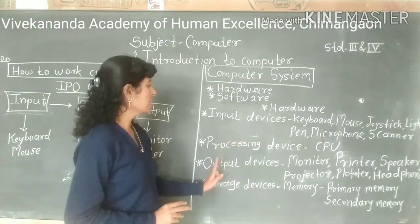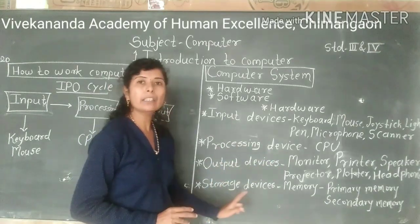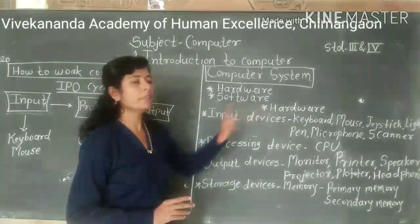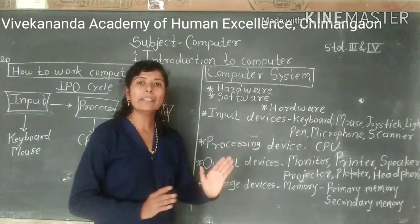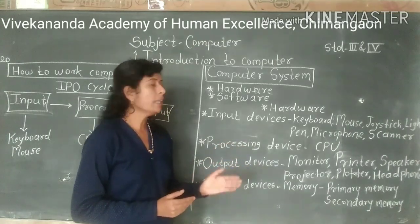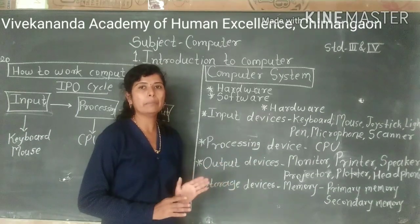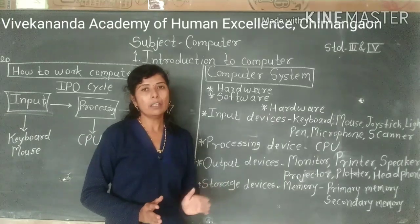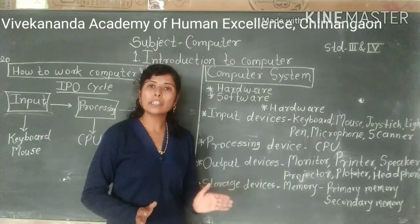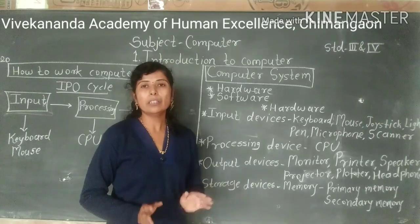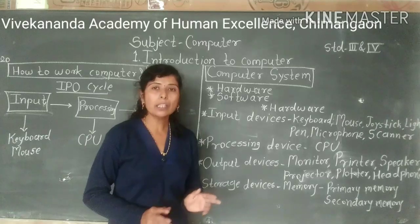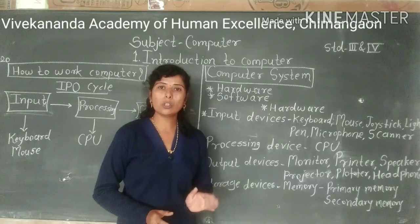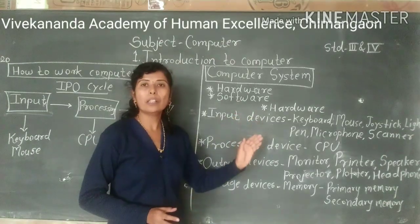Hardware is divided into four categories: input devices, processing devices, output devices, and storage devices. Now about software — hardware means you can touch and see it. Software means you cannot touch it. Software is the non-touchable part of the computer.